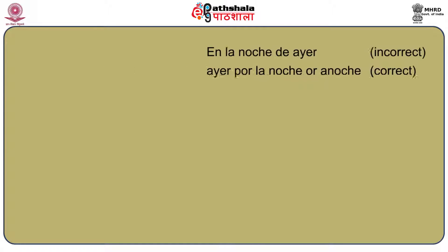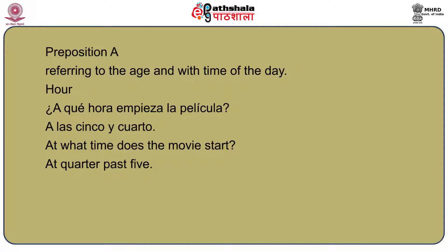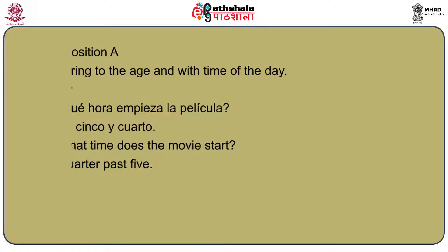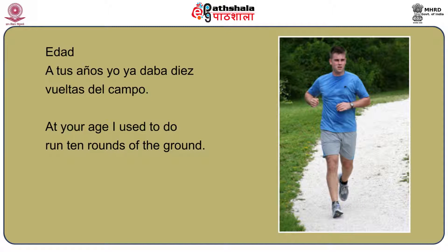The preposition A is used for telling the time — referring to the clock hour — and with age. '¿A qué hora empieza la película?' 'A las cinco y cuarto.' At what time does the movie start? At quarter past five. With age: 'A tus años yo ya daba diez vueltas del campo.' At your age, I used to do ten rounds of the ground.